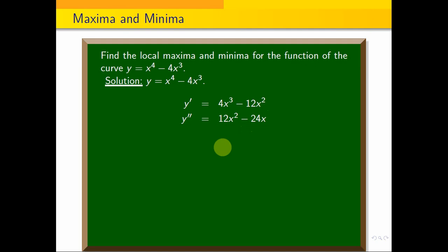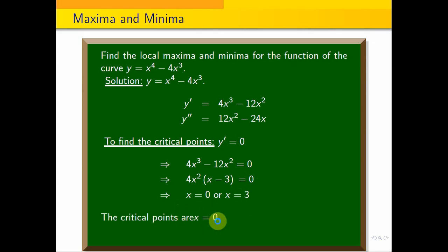Now, finding critical points. Critical points: y' equals 0. That means 4x cubed minus 12x squared equals 0. This implies that x equals 0 or x equals 3. Therefore, the critical points are x equals 0 and x equals 3.